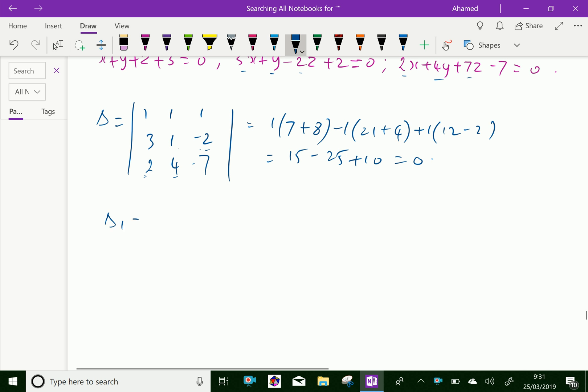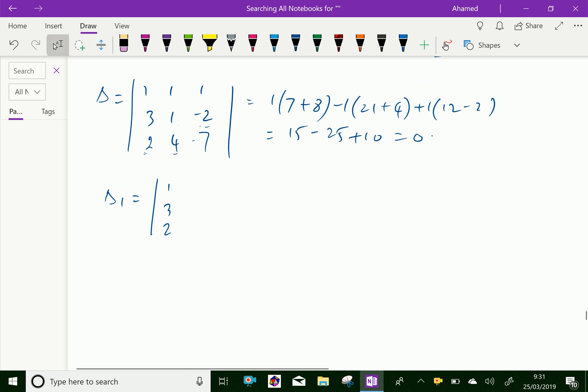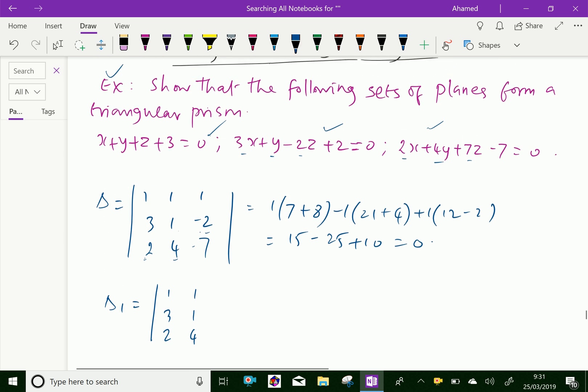Just we will check it. Delta 1 gives that 1, 1, 3; 3, 1, 2; 2, 4. In place of the third column, we have to write the constant terms. That is 3, 2, -7.